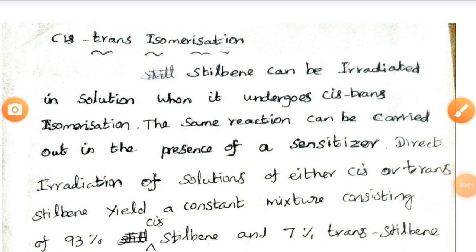Dear students, in organic photochemistry, there is another important topic: cis-trans isomerization. First of all, we want to know what is cis-trans isomerization. We have heard about cis-trans forms before. The cis form has similar groups on the same side, while trans has similar groups on the opposite side.